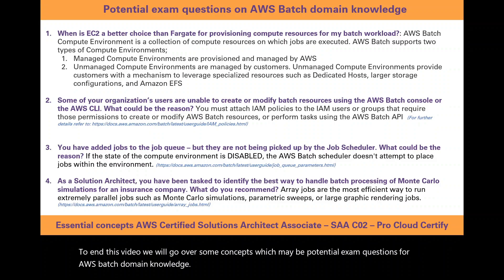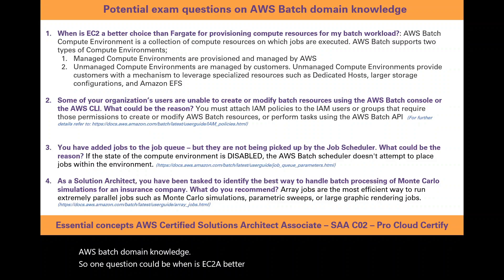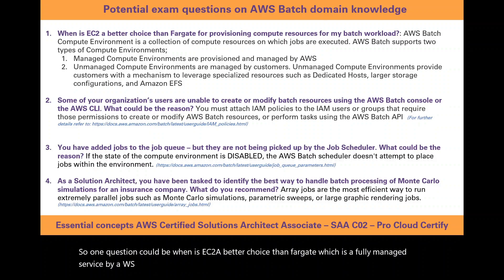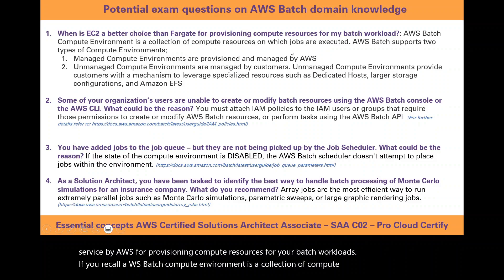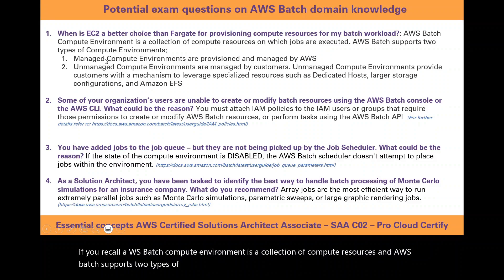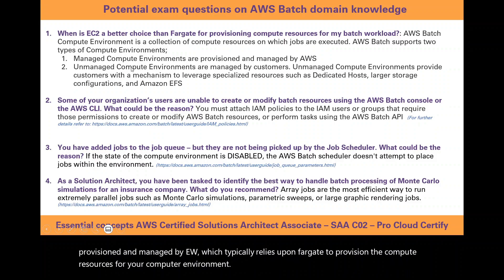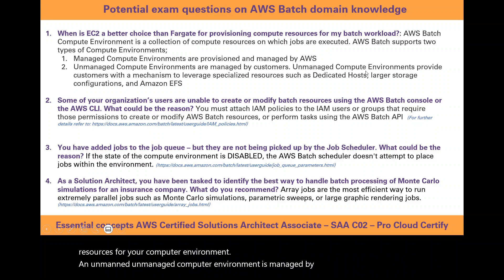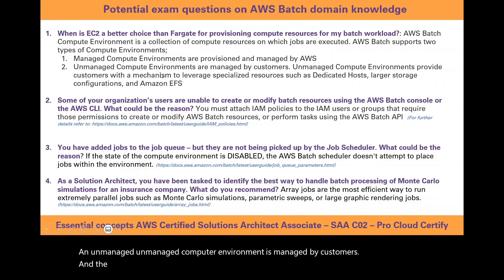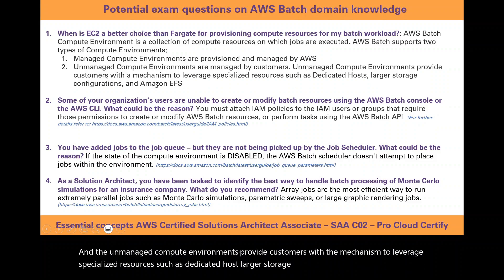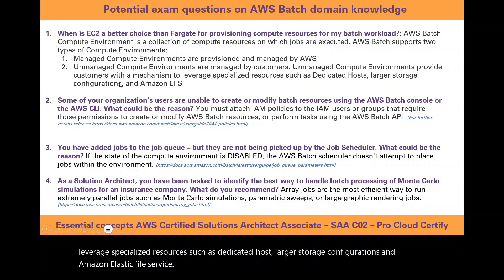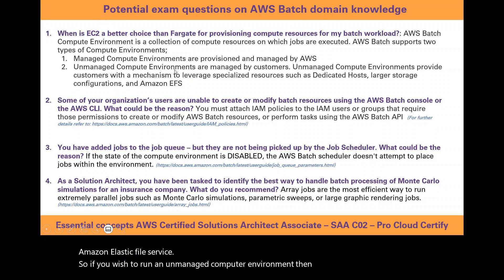One exam question could be: when is EC2 a better choice than Fargate, which is a fully managed service by AWS for provisioning compute resources for your batch workloads? AWS Batch compute environments support two types: a managed compute environment provisioned and managed by AWS, which typically relies on Fargate; and an unmanaged compute environment managed by customers, which provides the mechanism to leverage specialized resources such as dedicated hosts, larger storage configurations, and Amazon Elastic File Service. So if you wish to run an unmanaged compute environment, EC2 may be a better choice than Fargate.